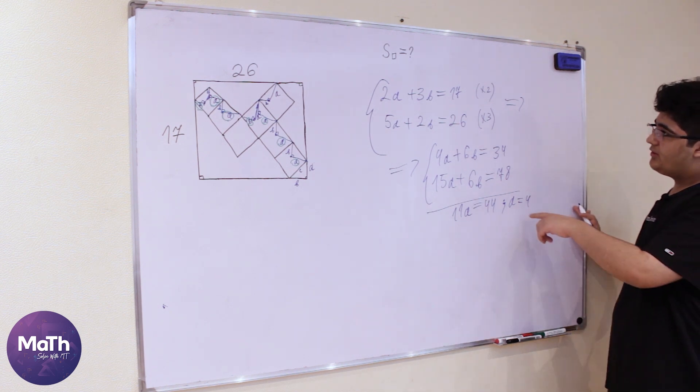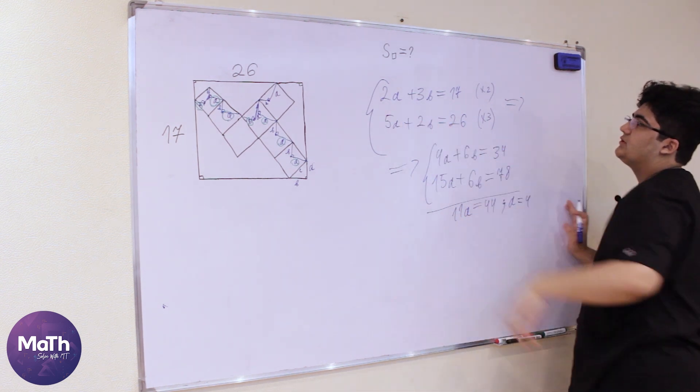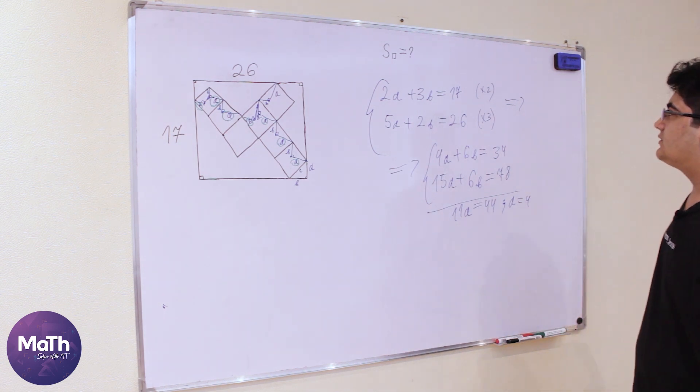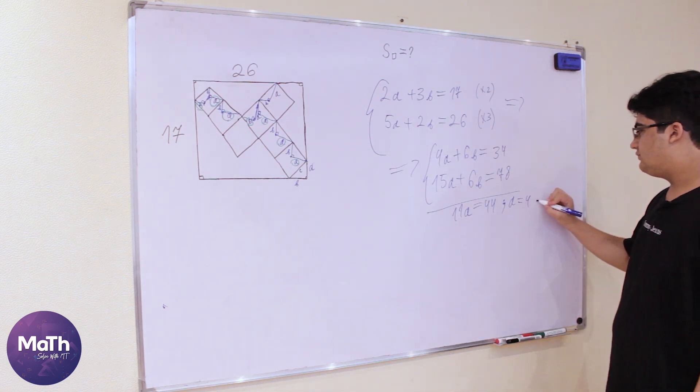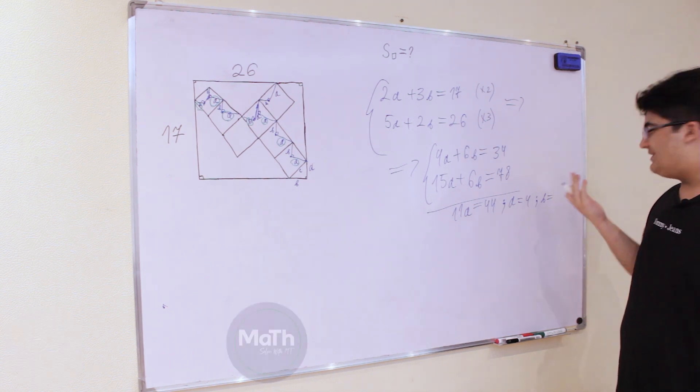And then we can put 4 here and we'll get 8, so 3b is equal to 9 and b is equal to 3.